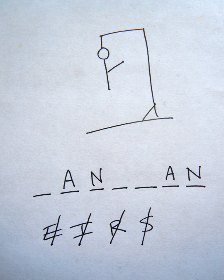If the guessing player suggests a letter which occurs in the word, the other player writes it in all its correct positions. If the suggested letter or number does not occur in the word, the other player draws one element of a hanged man stick figure as a tally mark.